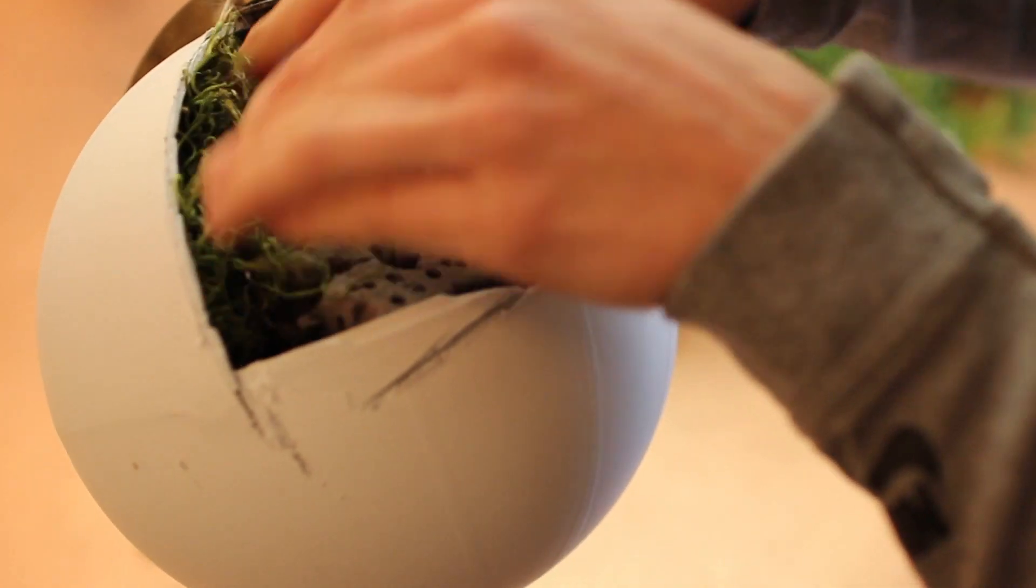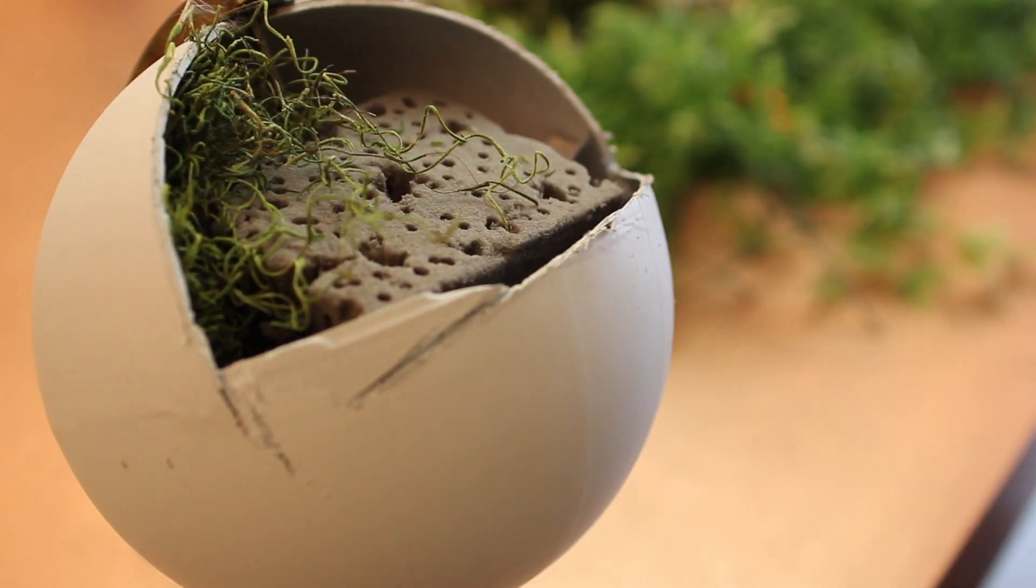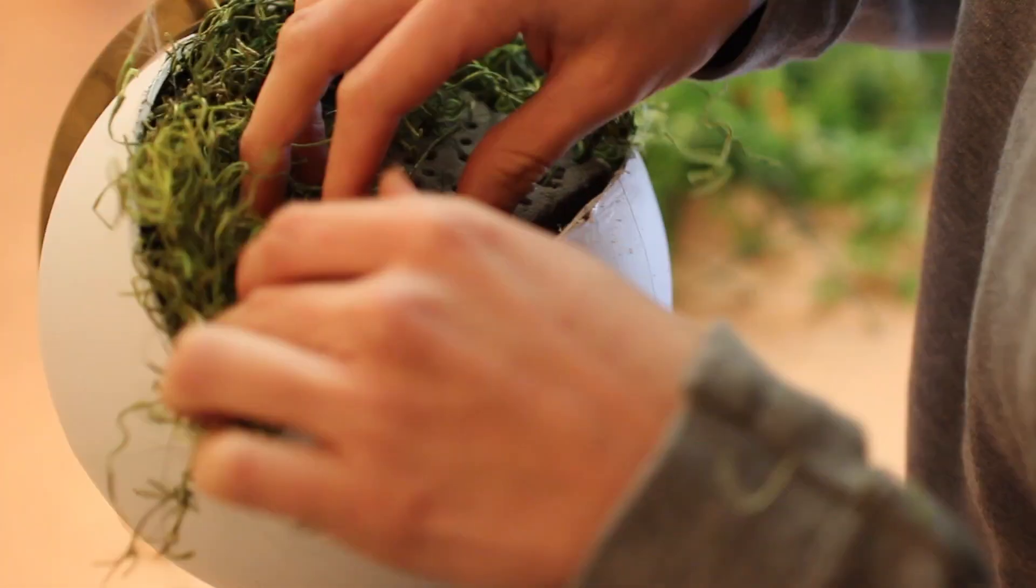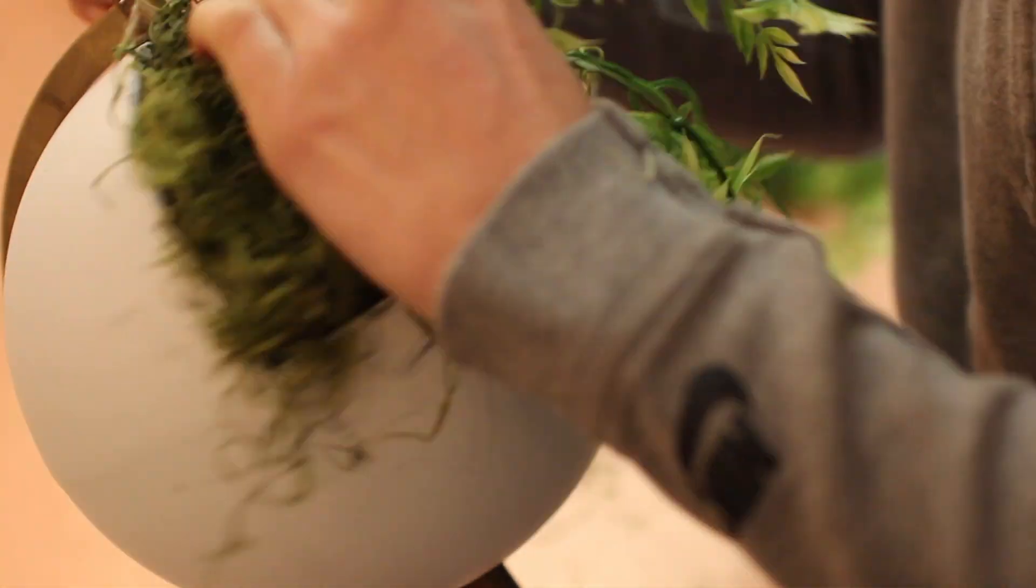Then this is where you get creative. You just jab those plants right on in there. You can add moss like I am here. I topped it off with a succulent. It is totally up to you and the vibe of your space.